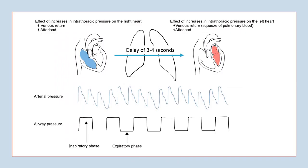This illustration puts it all together. On the right side of the heart, there will be decreased venous return and increased afterload. It will take a few seconds before this gets to the left side of the heart. On the left side, there will be increased venous return and decreased afterload. The effect on the left side will be seen during inspiration, and the effect of the right side on the stroke volume of the left side will be seen at the end of expiration.